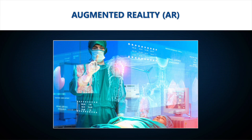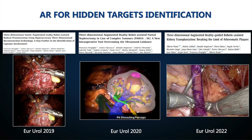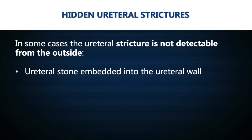In order to increase the precision in identifying the stricture during surgical dissection of the ureter, a step further to the use of cognitive 3D guidance has to be done, testing the role of augmented reality surgical navigation. Such technology has already demonstrated great usefulness in identifying hidden targets in other surgical settings, such as prostate lesions, kidney neoplasms, and ileal artery plaques in kidney transplant.